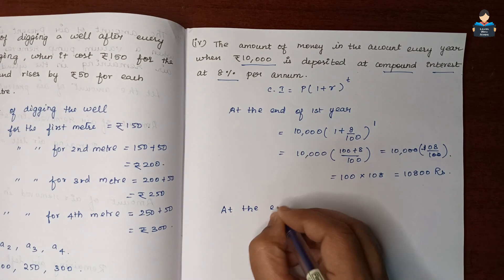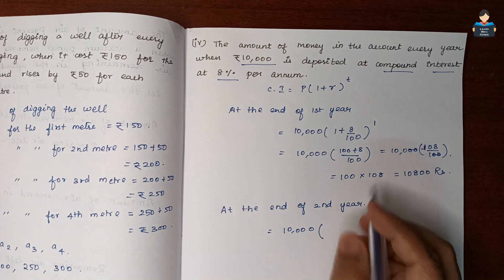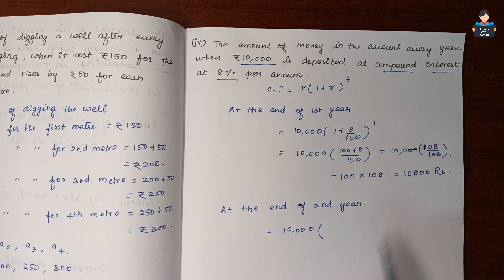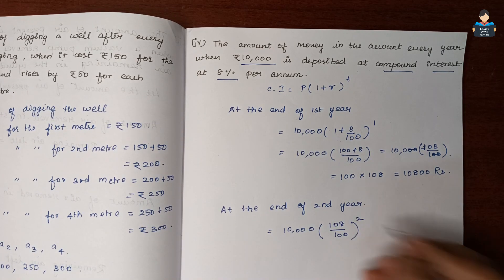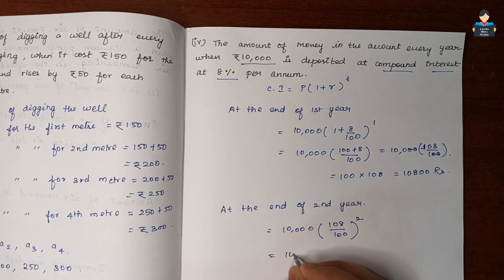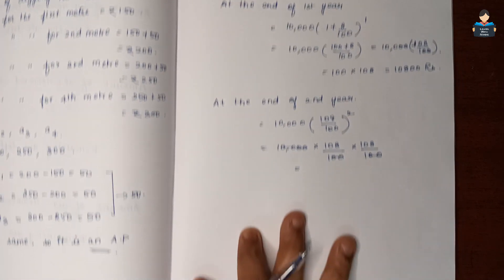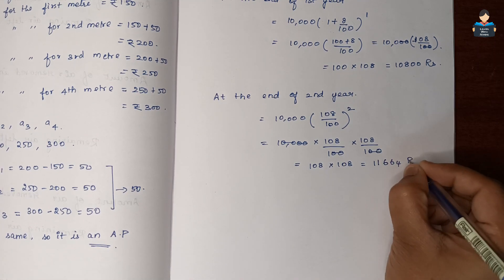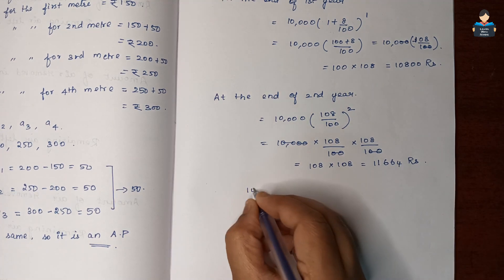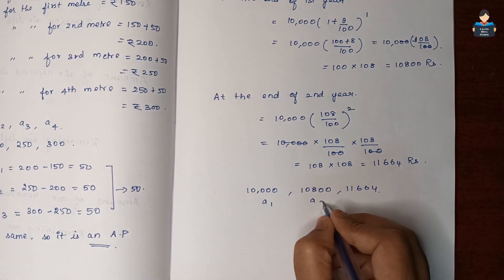At the end of second year: 10,000 into (108 by 100) to the power 2, which gives 11,664 rupees. At the end of third year: 10,000 into (108 by 100) to the power 3, giving 12,597.12 rupees approximately. So A1 is 10,800, A2 is 11,664, and A3 is the third year amount.